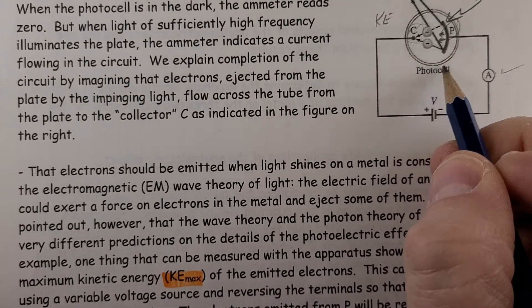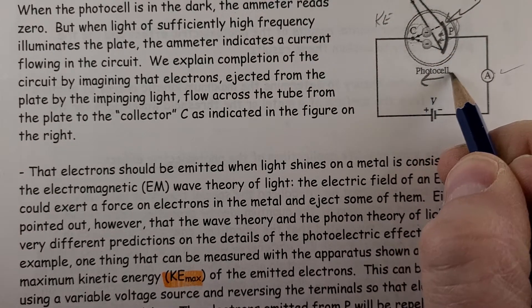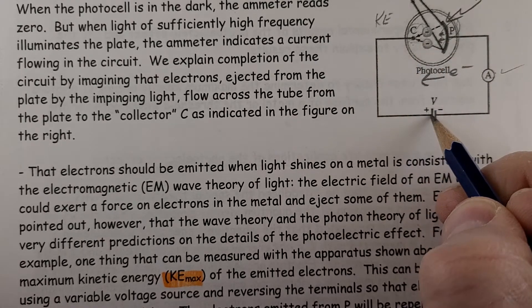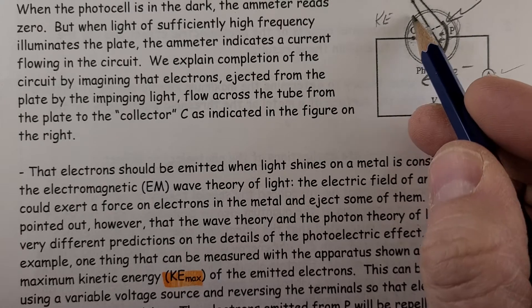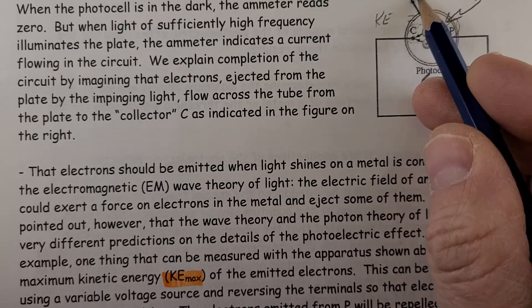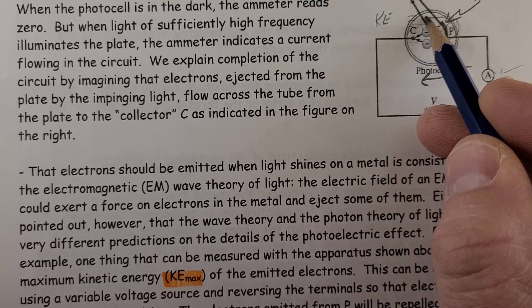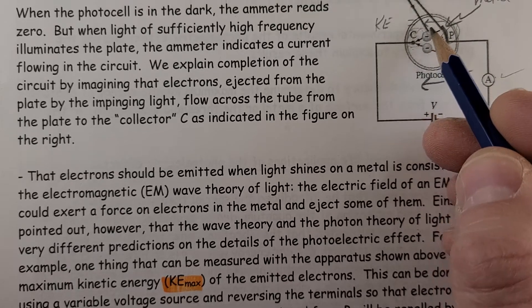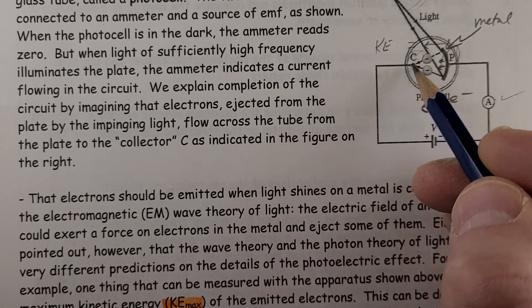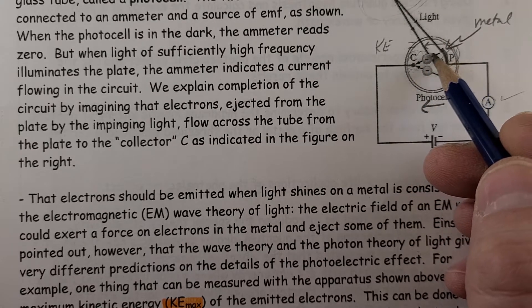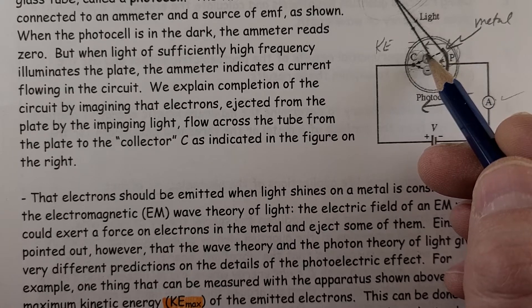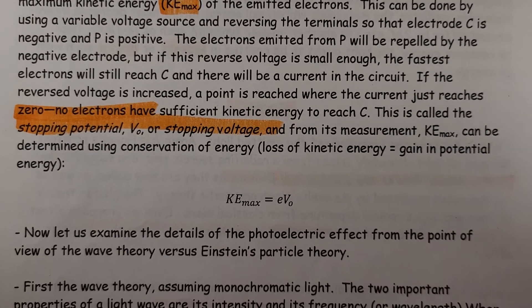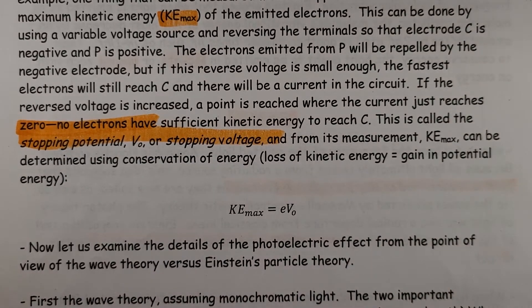And from its measurement, we can get kinetic energy max. So over here, I have electrons going this way. But if I change the direction of the battery so that this is negative, electrons will be blown off from the light. But we repel each other, so we won't quite make it here. So if I put enough electrons on this collector so that when the electrons come in this direction, at the point where they stop hitting this, that's going to give me an idea of what kinetic energy they have by reversing that voltage.